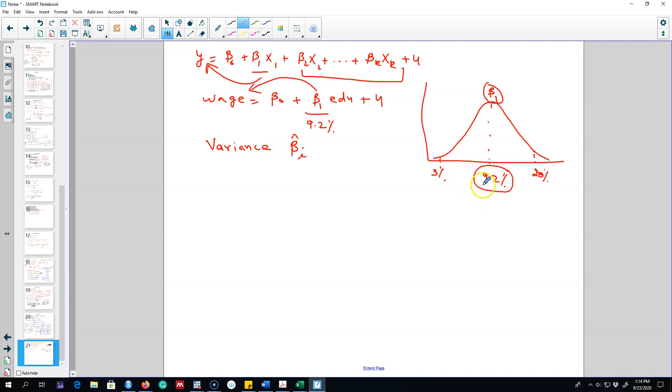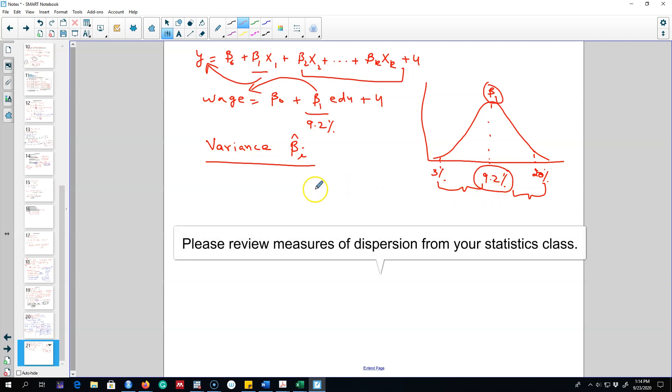And the variance will show us this information. So that's why we are interested in knowing how far away each observation is from its mean value, and the variance shows us this information.